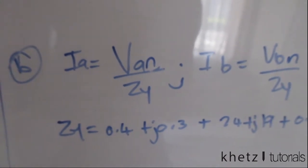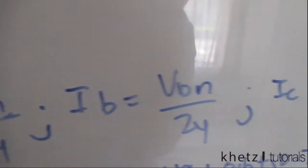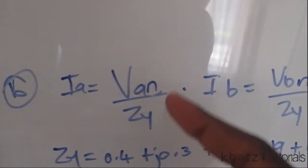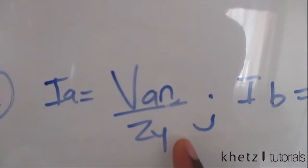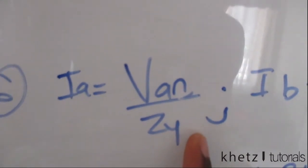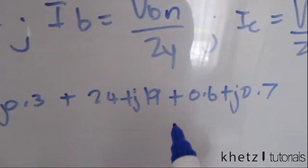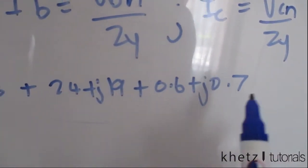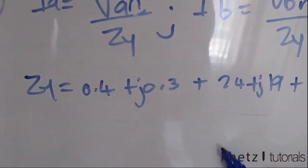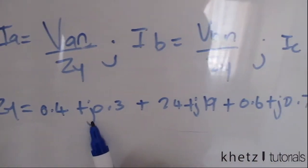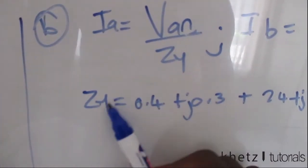For the second part of the question you use the formula: line current equals phase voltage divided by Z_Y, where Z_Y is the total impedance per phase. Since this is a YY connection — Y source and Y load — you add all of the impedances mentioned in the question to find Z_Y.